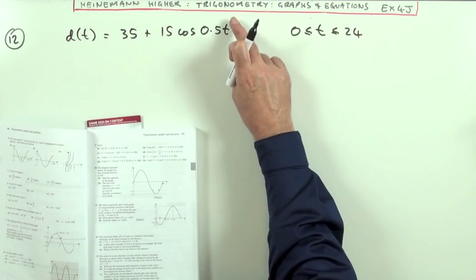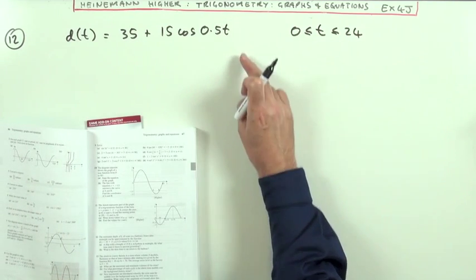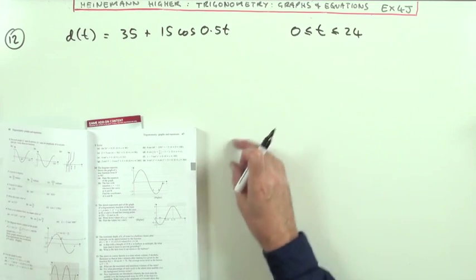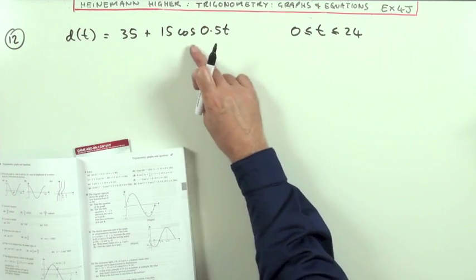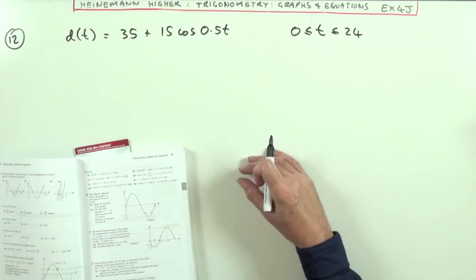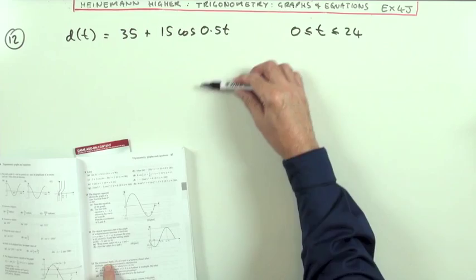Now, careful with this. It says T, not T degrees, so T's going to be in radians. It would have to be that, because otherwise this graph's only going up as far as 0.5 of 24, only going up to 12 degrees. No, it's a tide, and there's two tides a day.